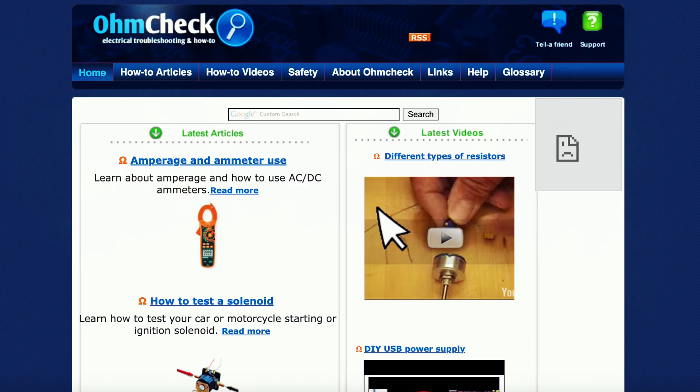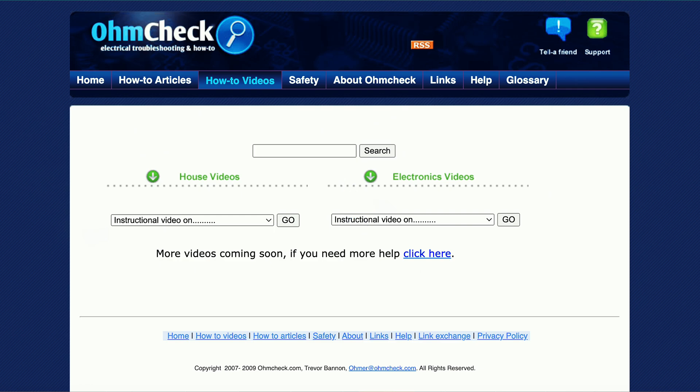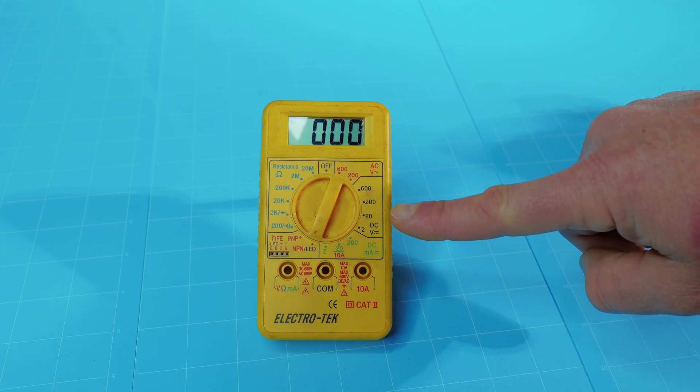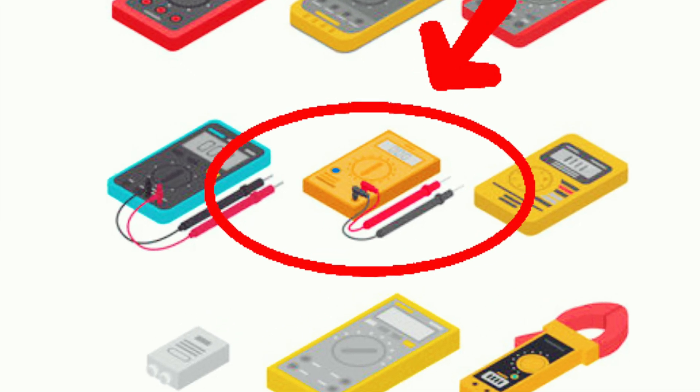Now, about 17 years ago, I actually started this channel under a different name, but I started the channel using this meter. That tells you the age of this meter, but it's actually the cheapest of all the multimeters that I actually own.